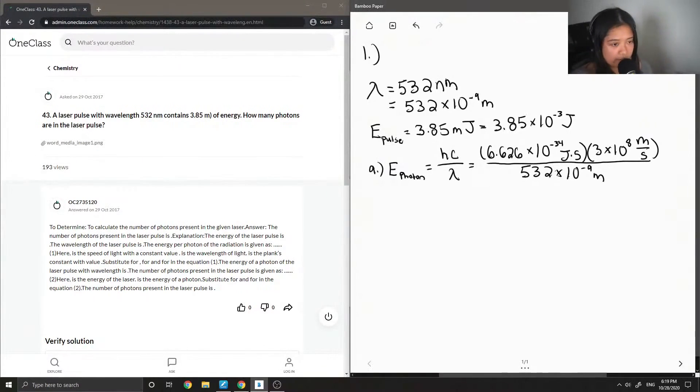Now if we solve for this, you'll notice that the units cancel out pretty well. The seconds cancel out here, meters cancel out as well. We're left with an energy value of 3.74 times 10 to the negative 19 joules. That's the first part of the question.